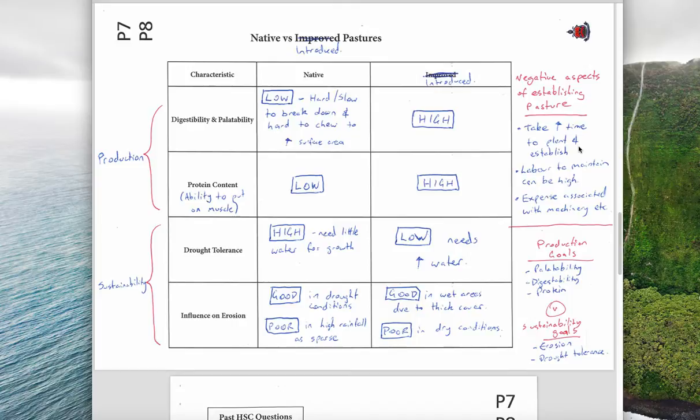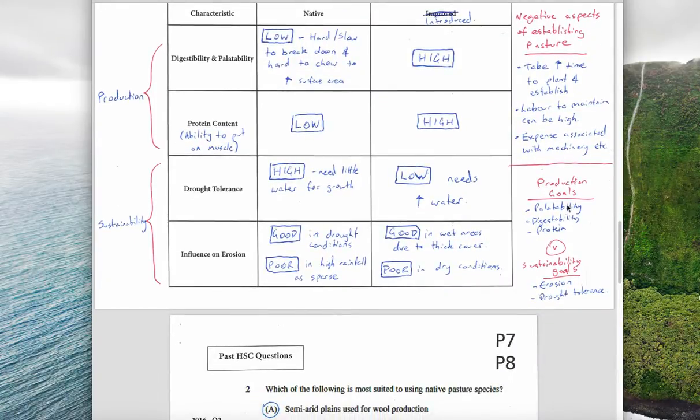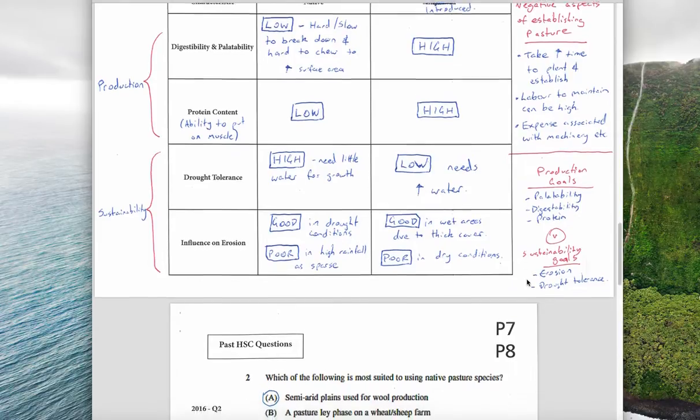Negative aspects of establishing a pasture are that it takes time to plant and establish and takes a lot of labor to maintain, and there's an expense associated with the machinery. You need to weigh up the production goals of palatability and digestibility and protein versus wanting to control erosion and drought tolerance as to which species of native and introduced you include.